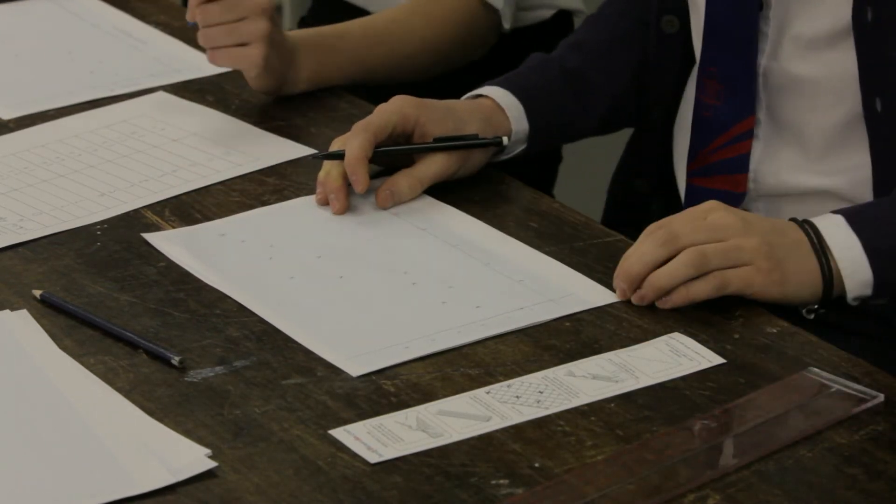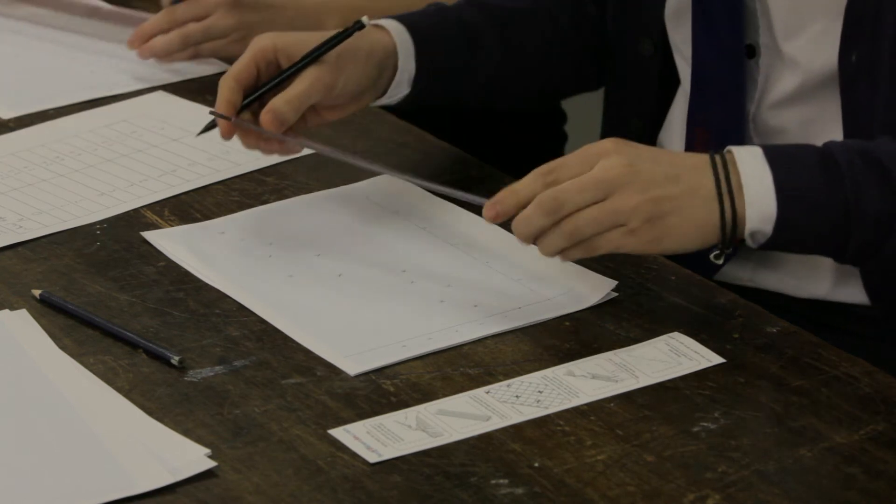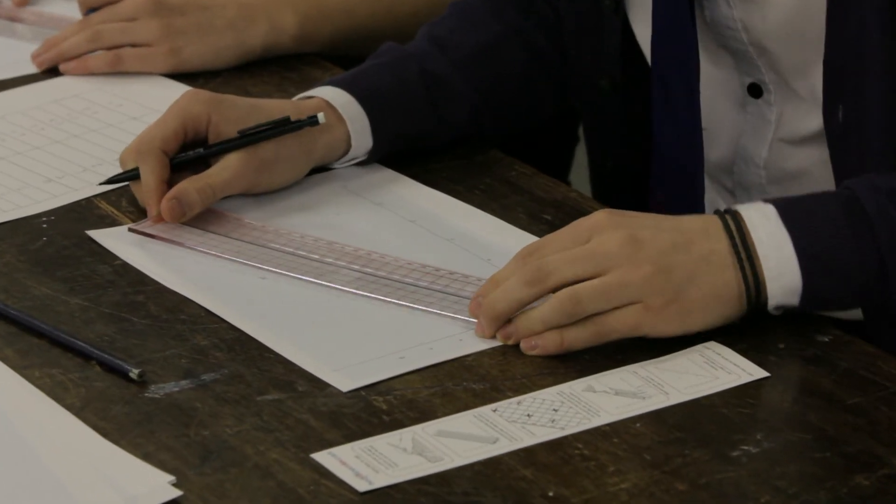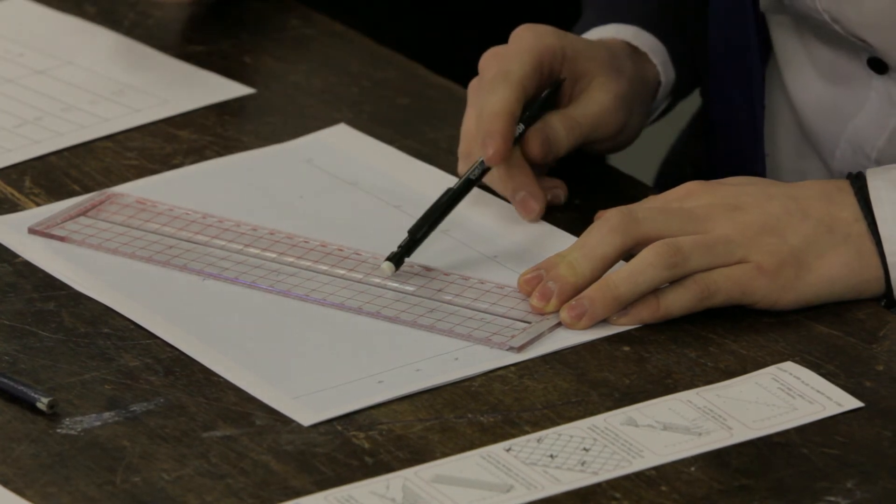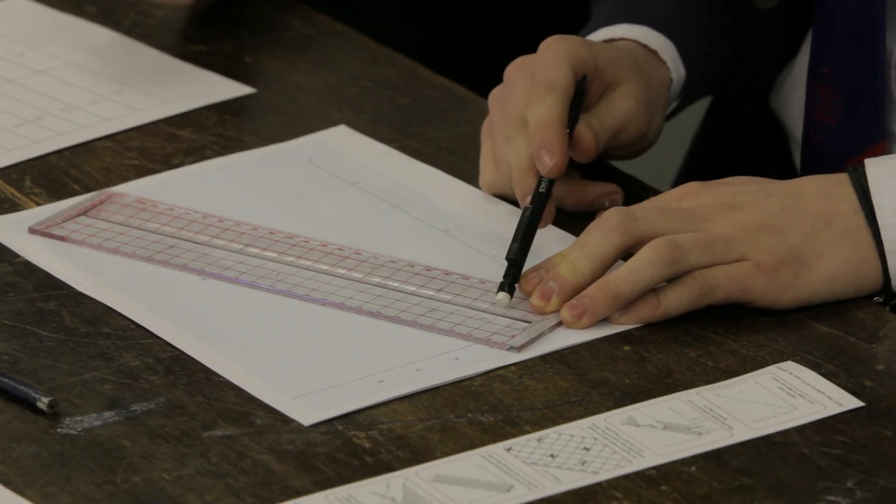Once you've plotted all the points correctly, place the Best Fit Line Ruler over the points roughly in line with their pattern. Look through the ruler at the position of your points. Remember, the Best Fit Line is going to belong to the central slot of the ruler.